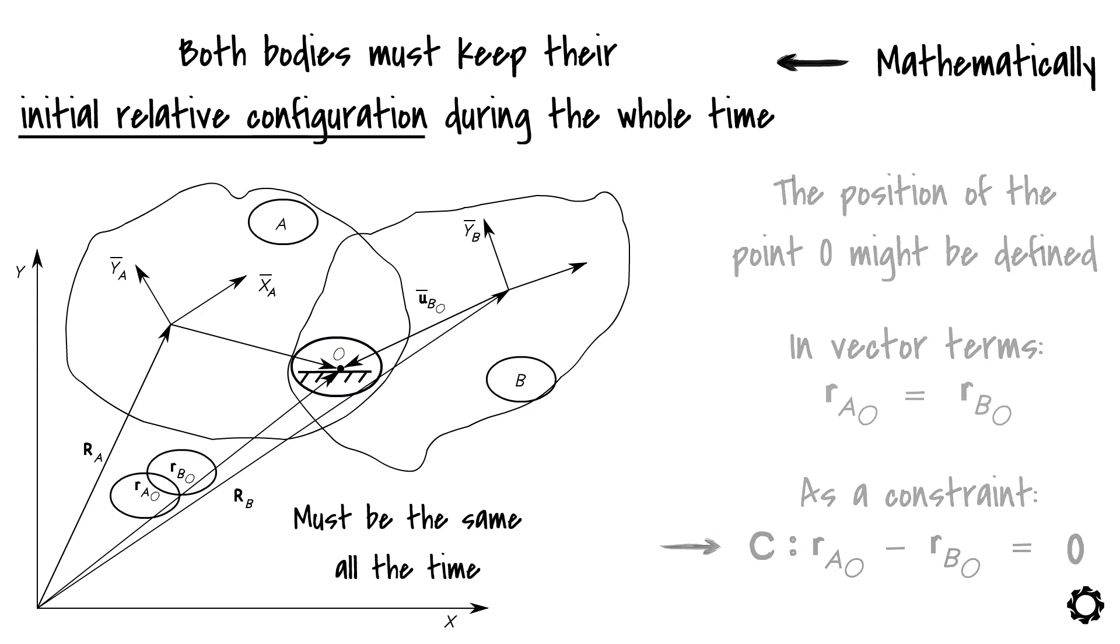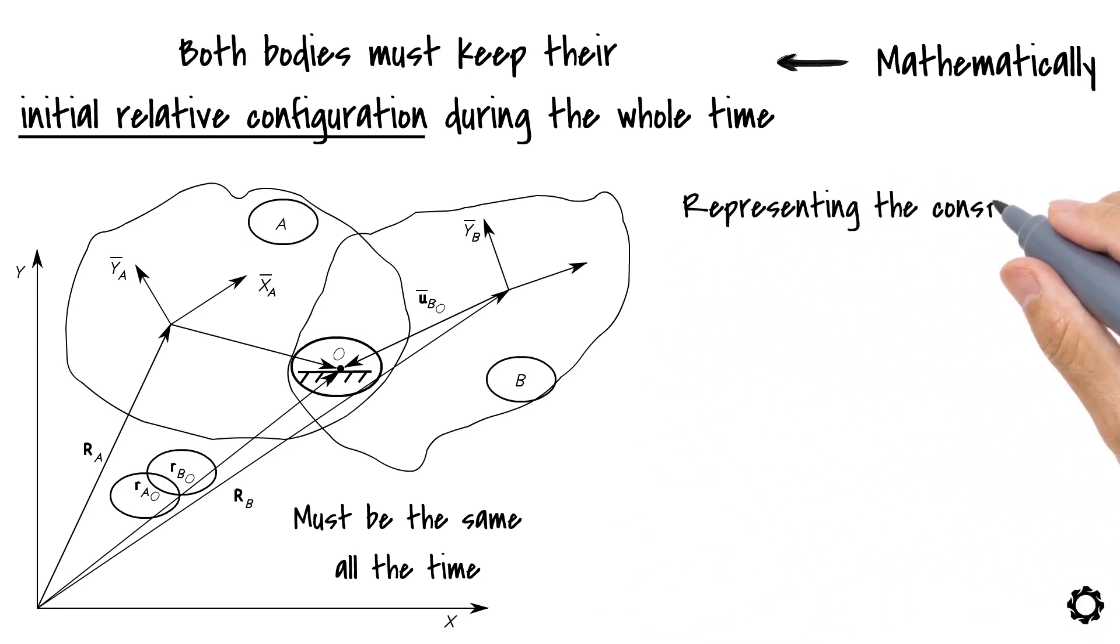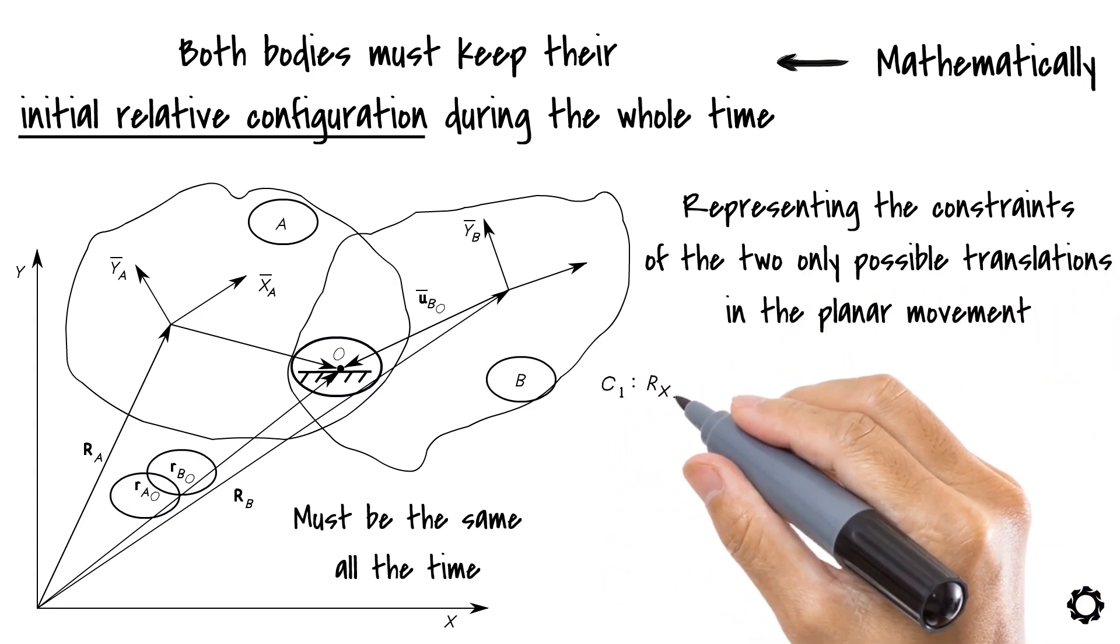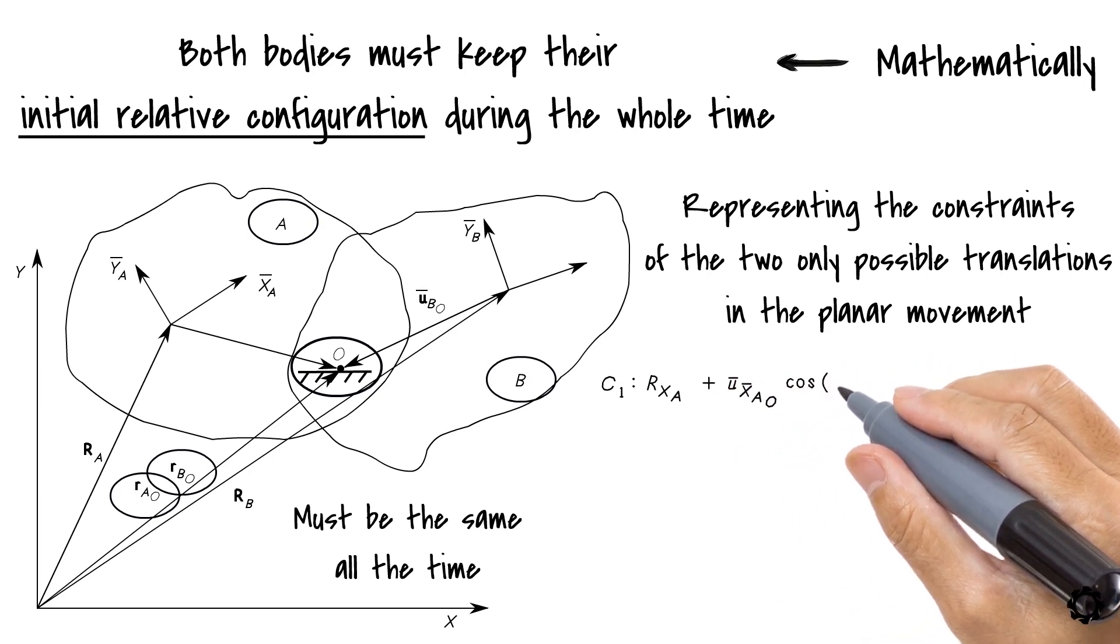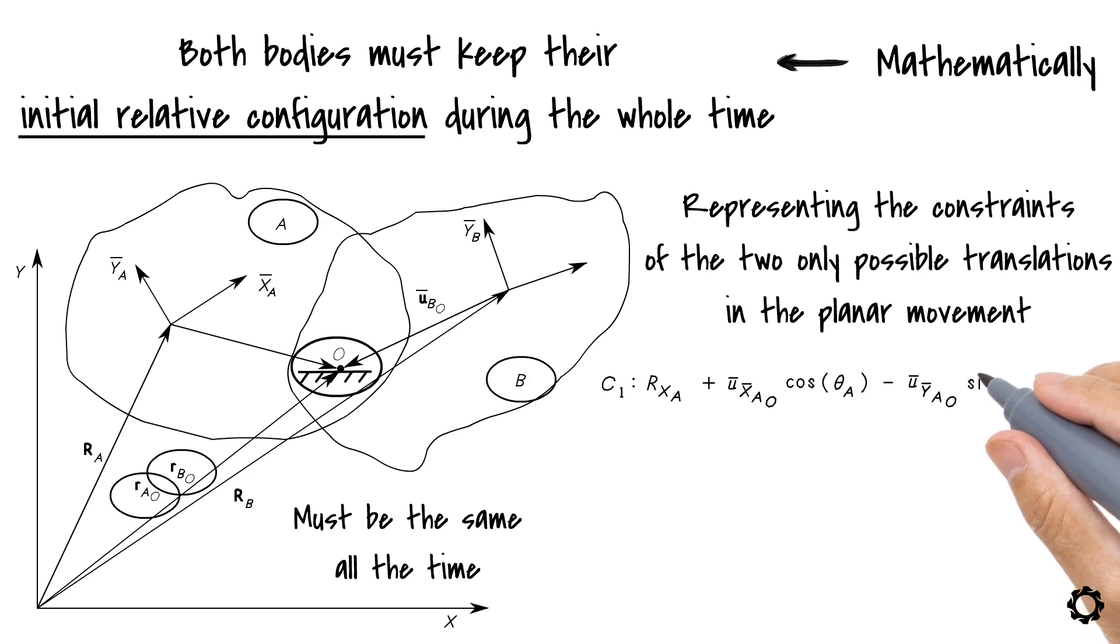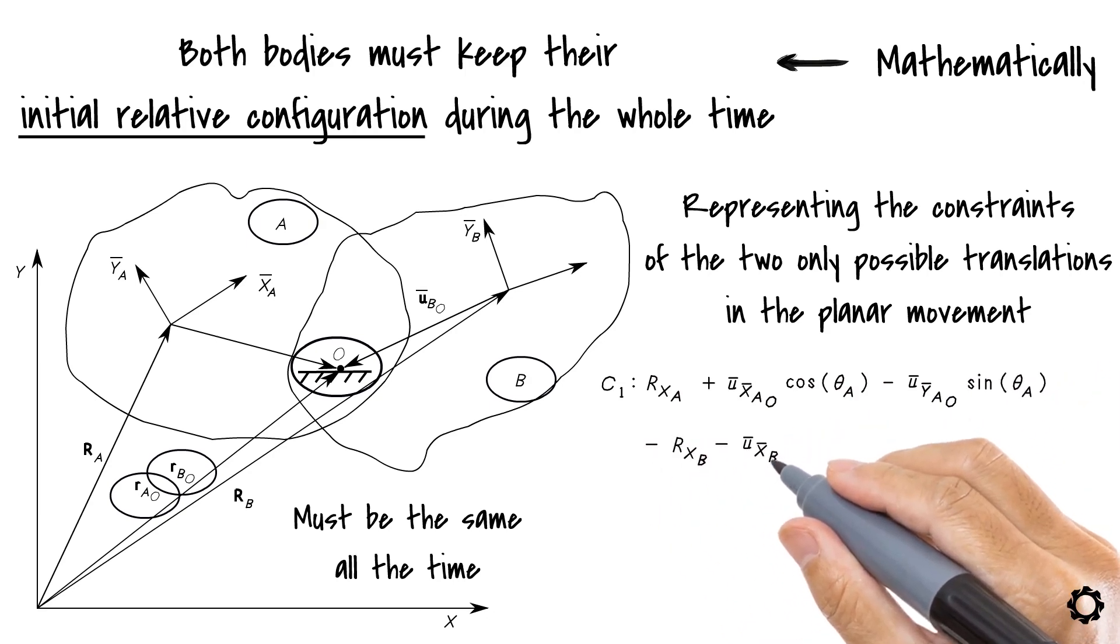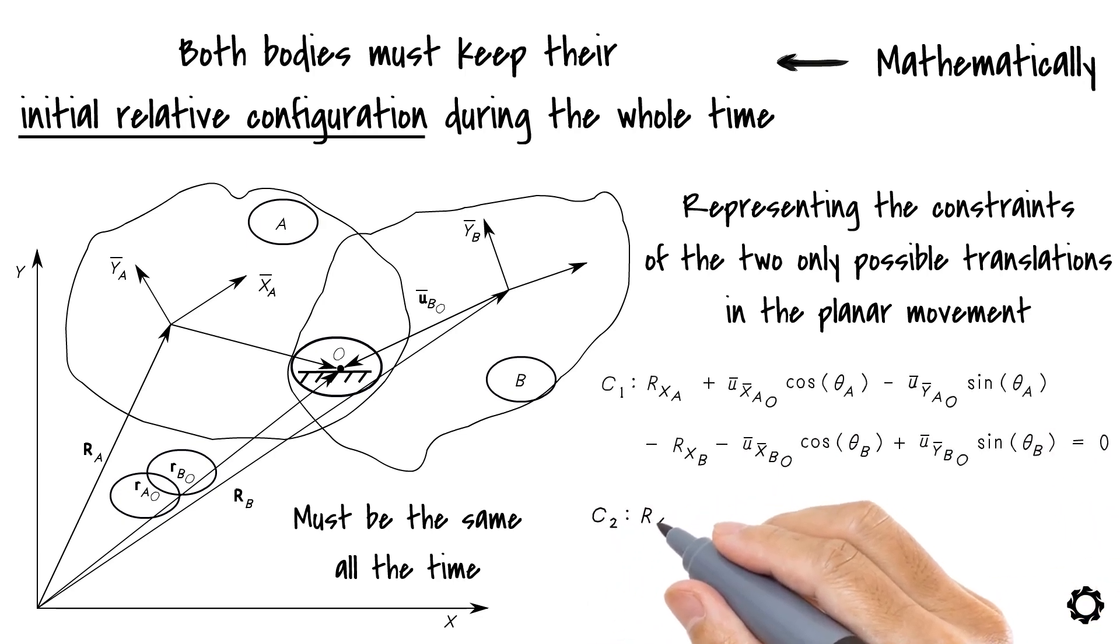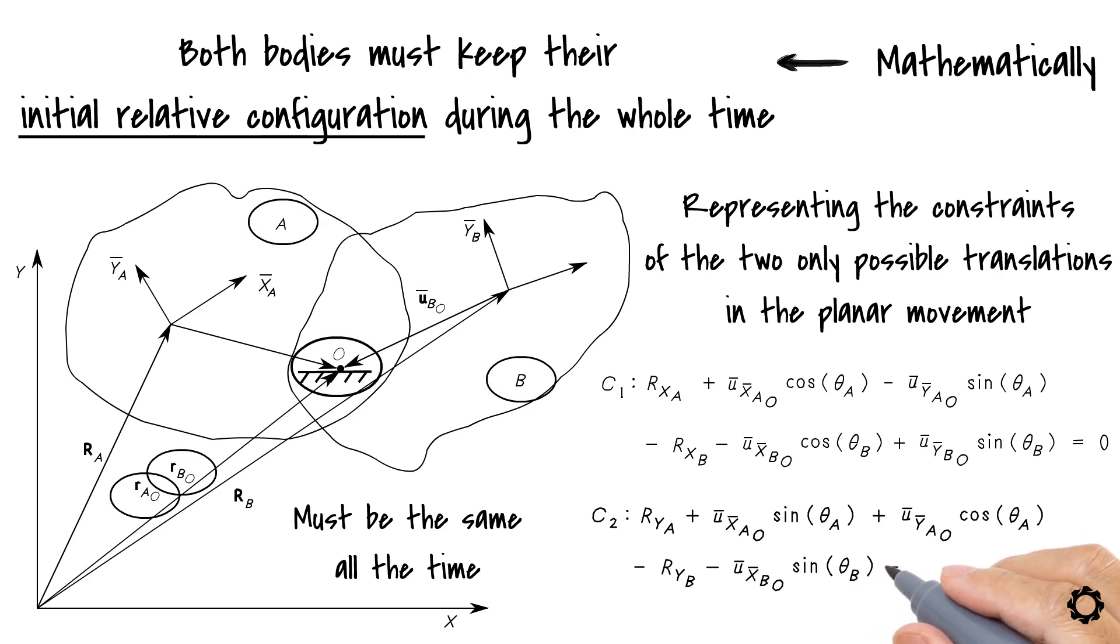This vector equation will origin two scalar equations representing the constraints of the two only possible translations in the planar movement. That is, C1 is RxA plus x-bar-AO cos theta A minus y-bar-AO sin theta A minus RxB minus x-bar-BO cos theta B minus y-bar-BO sin theta B equals 0. C2 is RyA plus x-bar-AO sin theta A plus y-bar-AO cos theta A minus RyB minus x-bar-BO sin theta B minus y-bar-BO cos theta B equals 0.